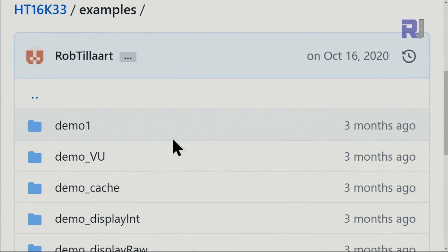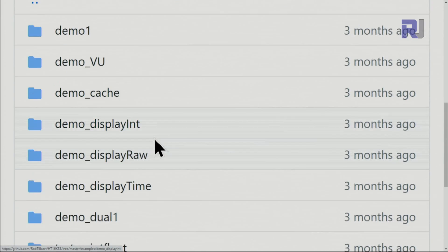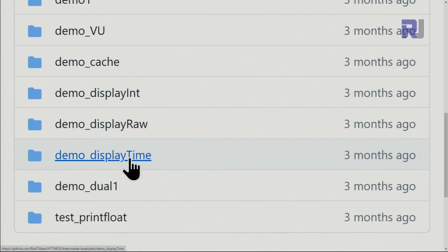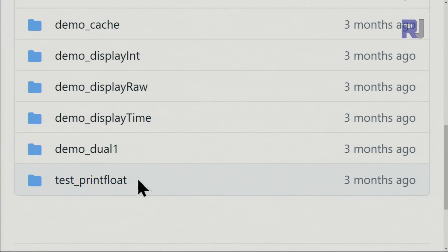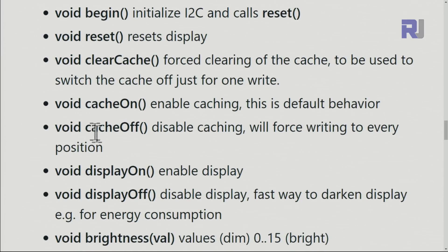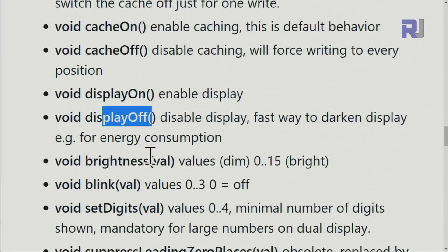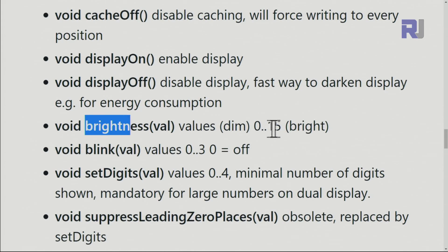If I click on GitHub, these are the examples available in your Arduino menu: demo, VU, cache, display integer, display raw, display time, dual display, and test print float. Here you can set display on or display off to turn it on and off. You can set the brightness between 0 to 15.